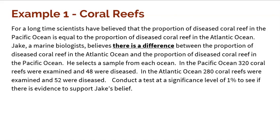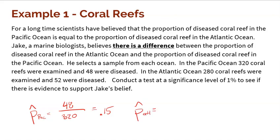Before doing any steps, let's get the data organized. We have two samples. The first sample is from the Pacific Ocean with 320 coral reef, of which 48 were diseased. So 48 divided by 320 gives us a nice 0.15, or 15%. Then we have a sample from the Atlantic Ocean with 280 coral reef, of which 52 were diseased. So 52 divided by 280 gives us approximately 0.186, or about 18.6%.